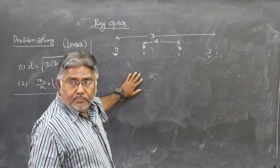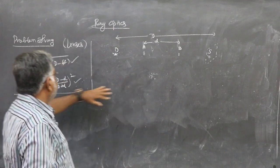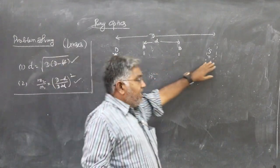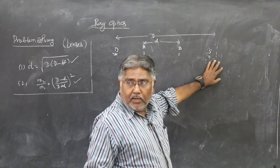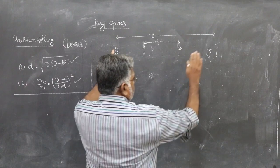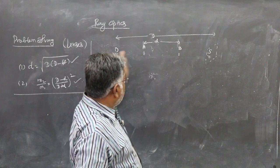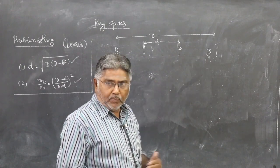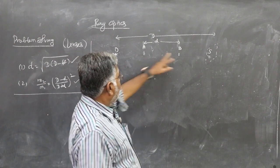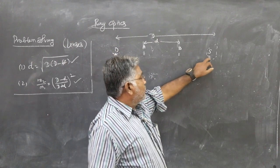Now we can see another problem using a convex lens. There is a luminous object at O and a screen S. They are kept at a fixed set distance of separation — O is fixed in its place and S is fixed in its place. You move a convex lens in between O and S, and it is found that at two different positions of the convex lens, the image is formed on the screen.